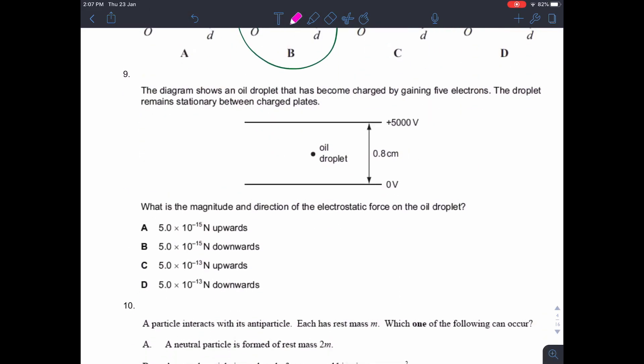Question nine. An oil droplet has become charged by gaining five electrons. The droplet remains stationary between charged plates. So the first thing that we know is the charge on the oil droplet is 5E. The magnitude and direction of the electrostatic force on the oil droplet... So the first thing that we can do is we can think about the magnitude of the force. So the electric field strength from your data booklet is the change in potential over the change in distance. And in this case, the change in potential is 5000 volts divided by 0.8 centimetres, which is 0.008 metres.